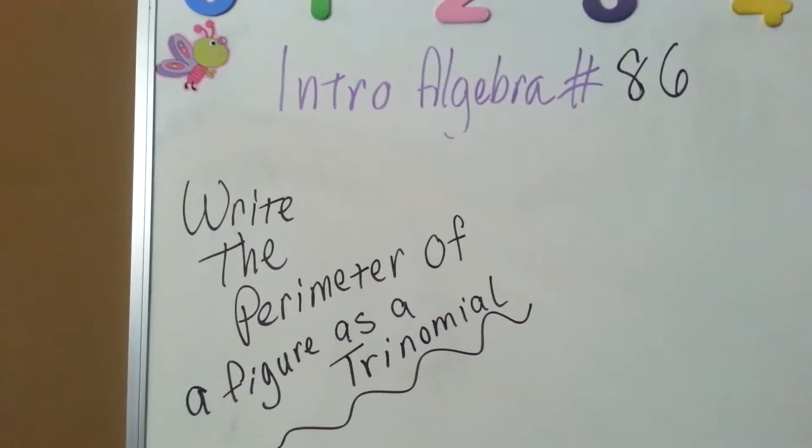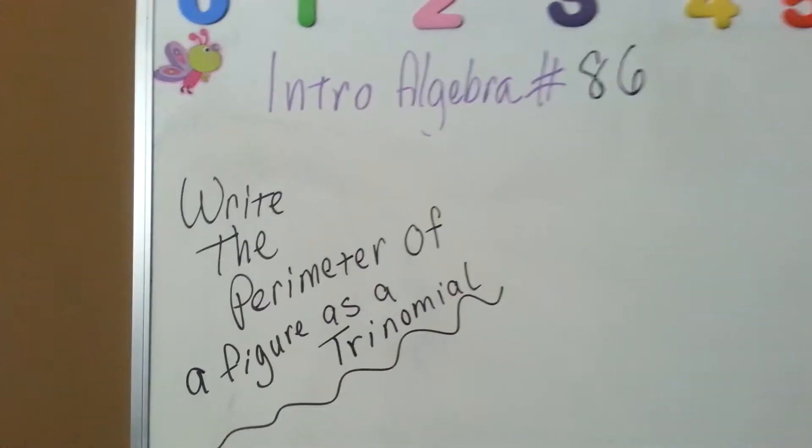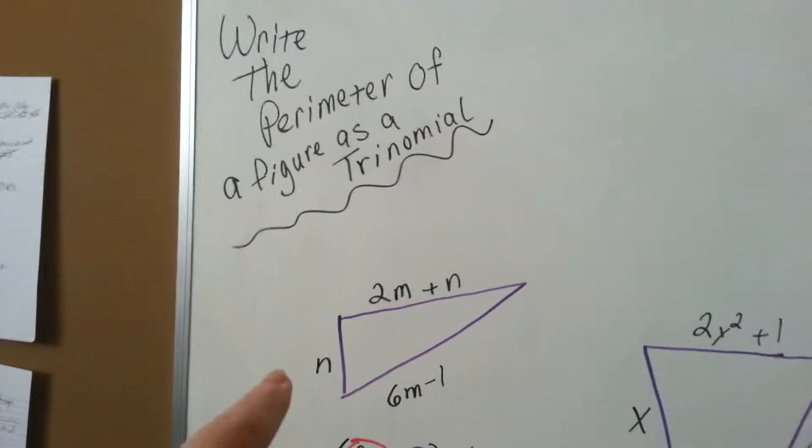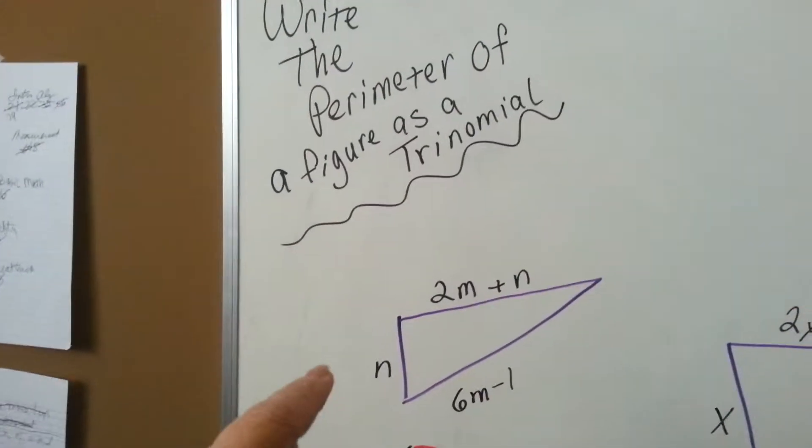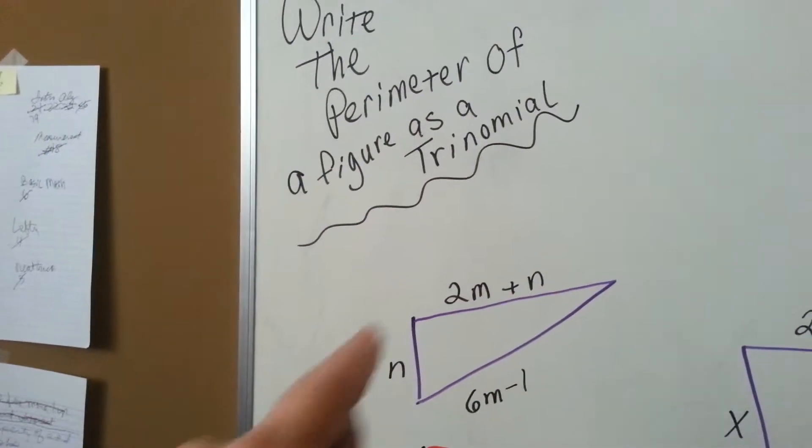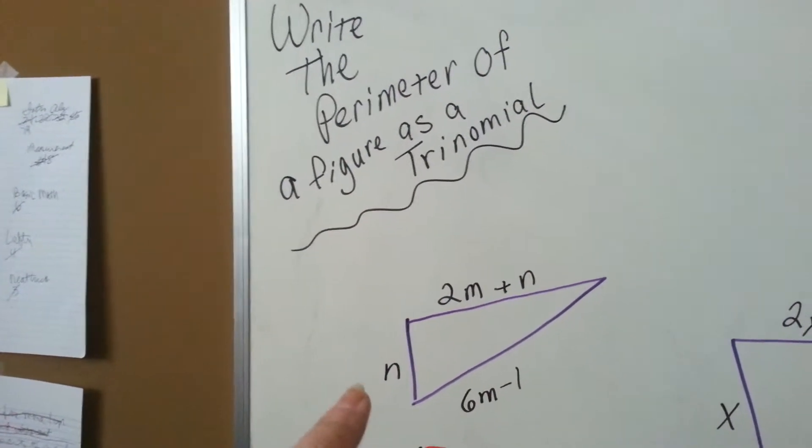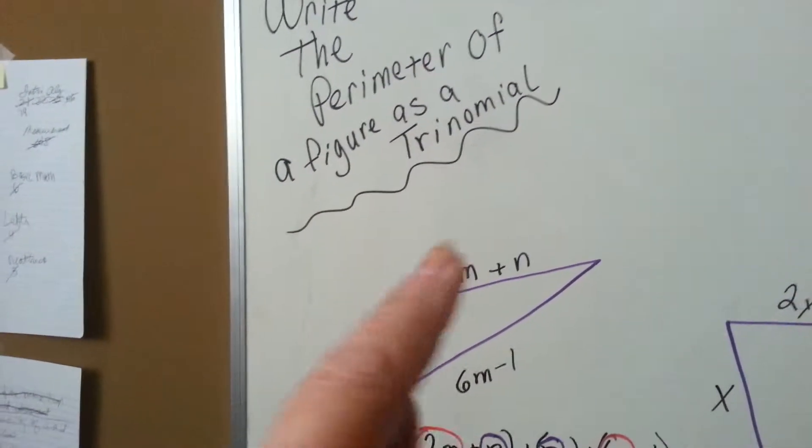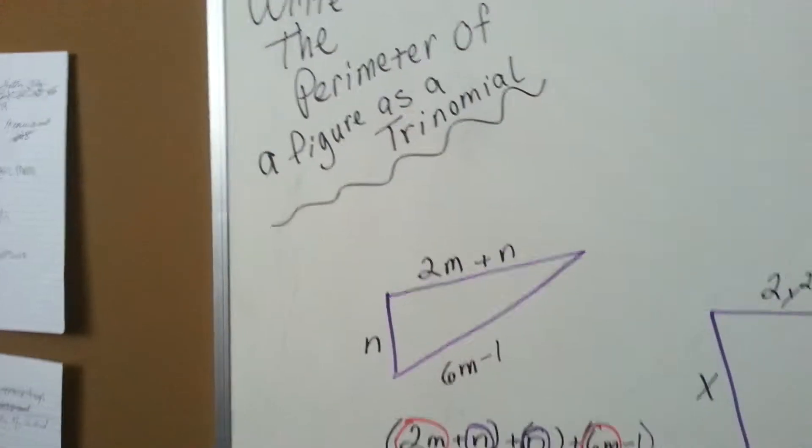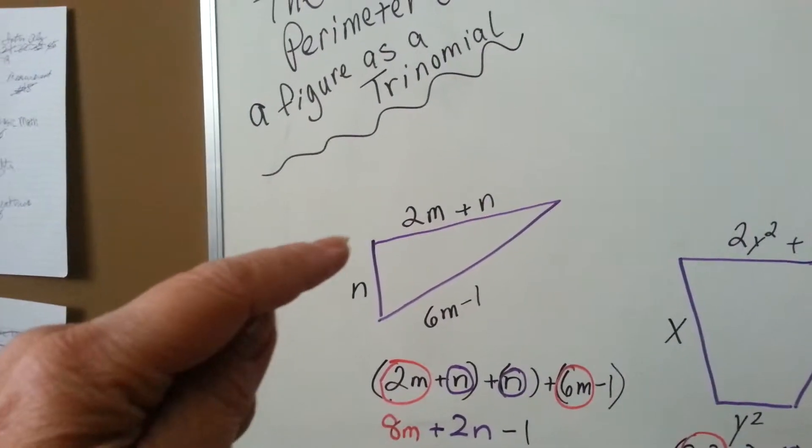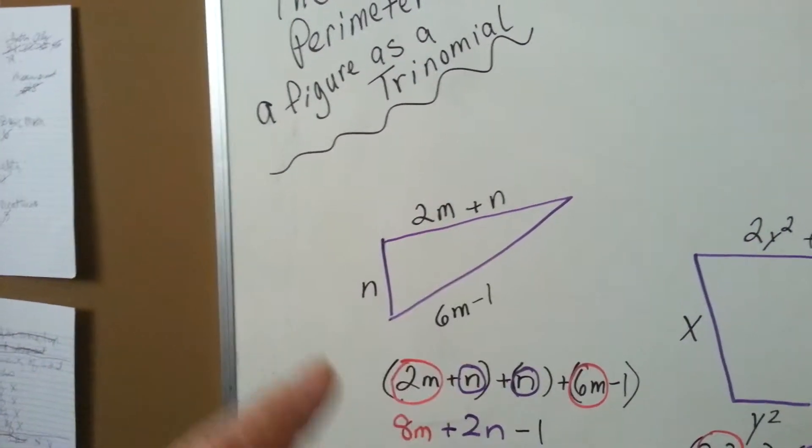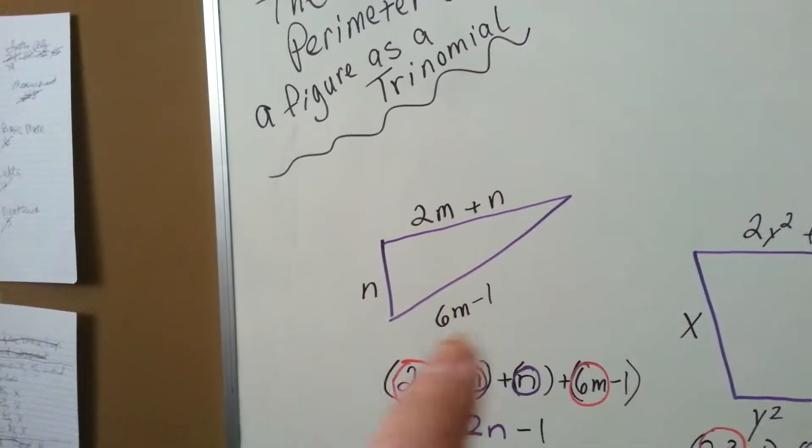How to write the perimeter of a figure as a trinomial. If you're given this figure and told to write its perimeter as a trinomial expression, what you need to do is combine the like terms. So the first thing we're going to do is write them out as a separate piece.